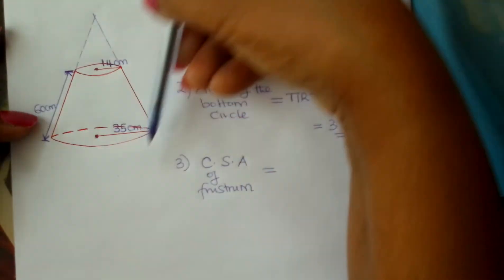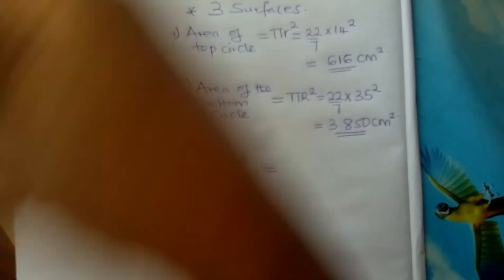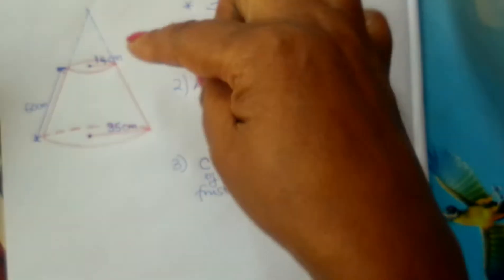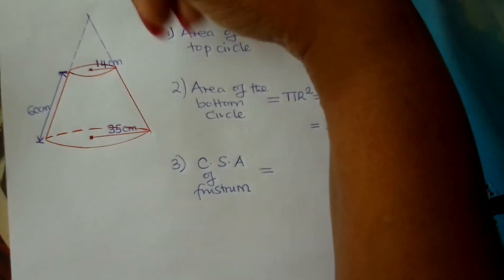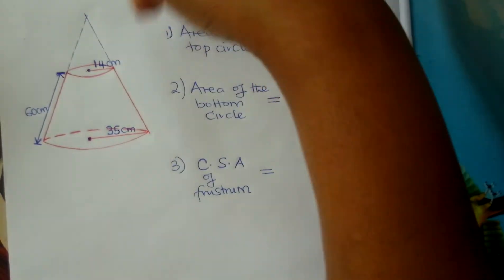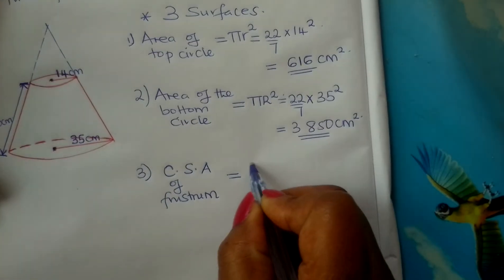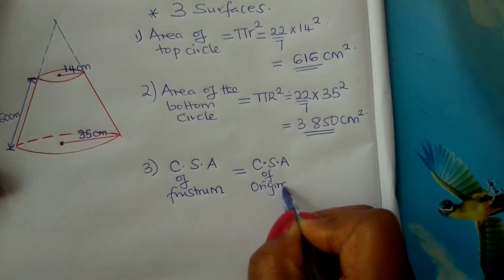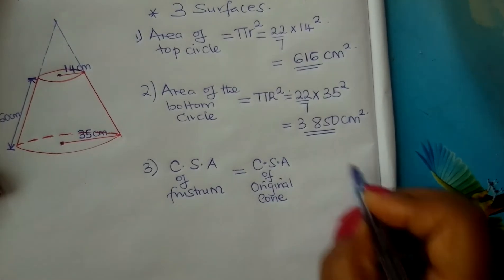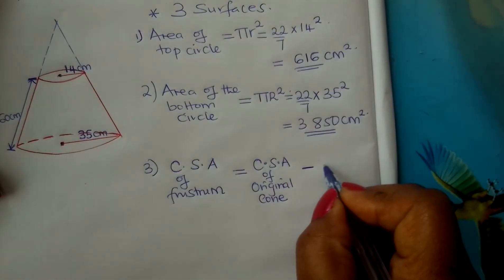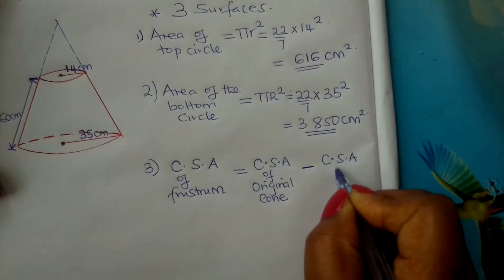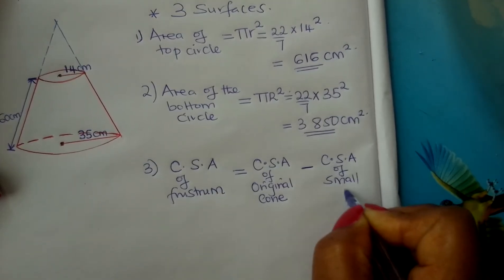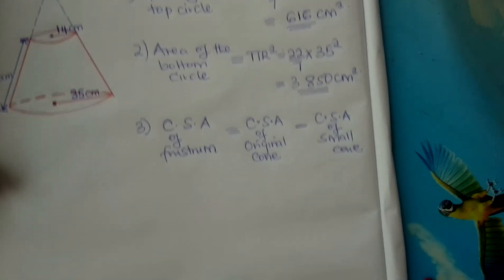By reasoning, the curved surface area of the frustum equals the curved surface area of the original big cone minus the curved surface area of the small cone that was removed. So you find the curved surface area of the original big cone, then subtract the curved surface area of the small cone.